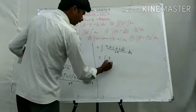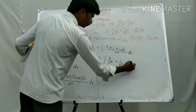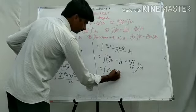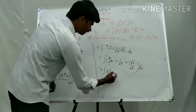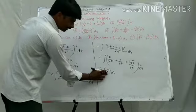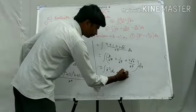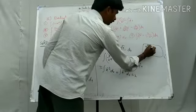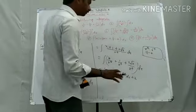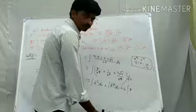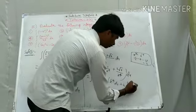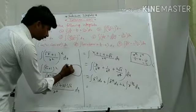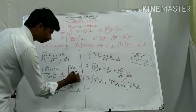That equals integral of x by x to the power 4 plus 1 by x to the power 4 plus 2 root x by x to the power 4 dx. Simplifying: integral of x to the power minus 3 plus x to the power minus 4 dx, plus 2 times integral of x to the power minus 7 by 2 dx.